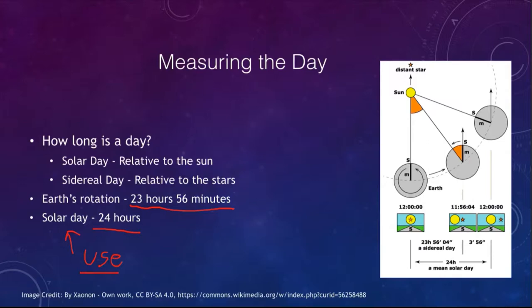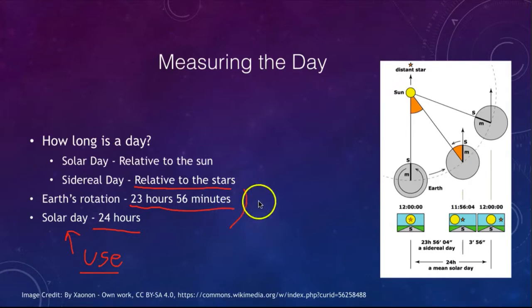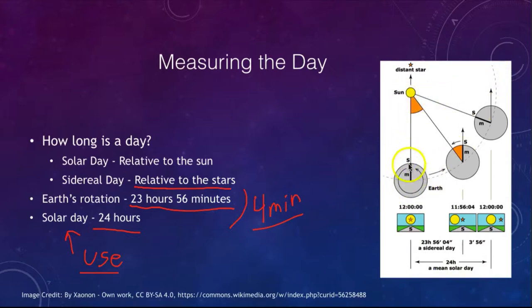We use the solar day as our measurement of time, not the Earth's raw rotation. We can measure rotation relative to the stars — that is called the sidereal day — but we can't easily observe when a star returns to the same position. We can easily see when the Sun is back in the same position, so we measure everything relative to the Sun. Why is there this four-minute difference between the solar and the sidereal day?